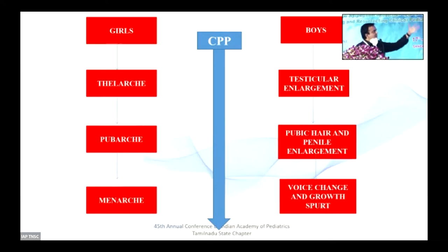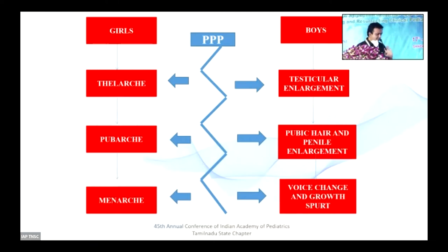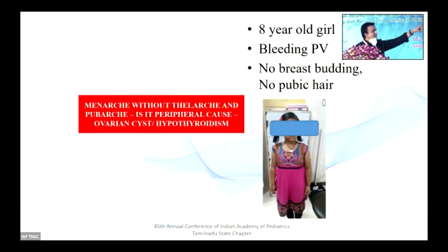The normal pubertal sequence in girls is thelarche, pubarche, menarche; in boys, testicular enlargement, pubic hair, and growth spurt. When the sequence is proper, think of central precocious puberty. However, whenever the sequence is disturbed — pubic hair but no menarche, or penile enlargement but normal testes — you think of peripheral precocious puberty, non-HPG axis mediated. A child with bleeding per vaginum and menarche but no breast budding and no pubic hair: the sequence is not obeyed — evaluate for a peripheral cause, which may be hypothyroidism.